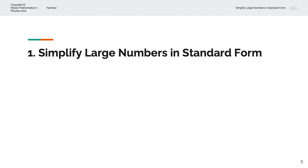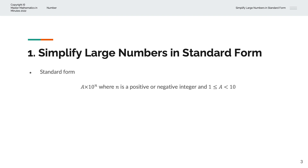How do we simplify large numbers in standard form? Recall the definition of standard form: numbers of the form a multiplied by 10 to the power of n, where n is a positive or negative integer, and a is greater than or equal to 1 and less than 10.